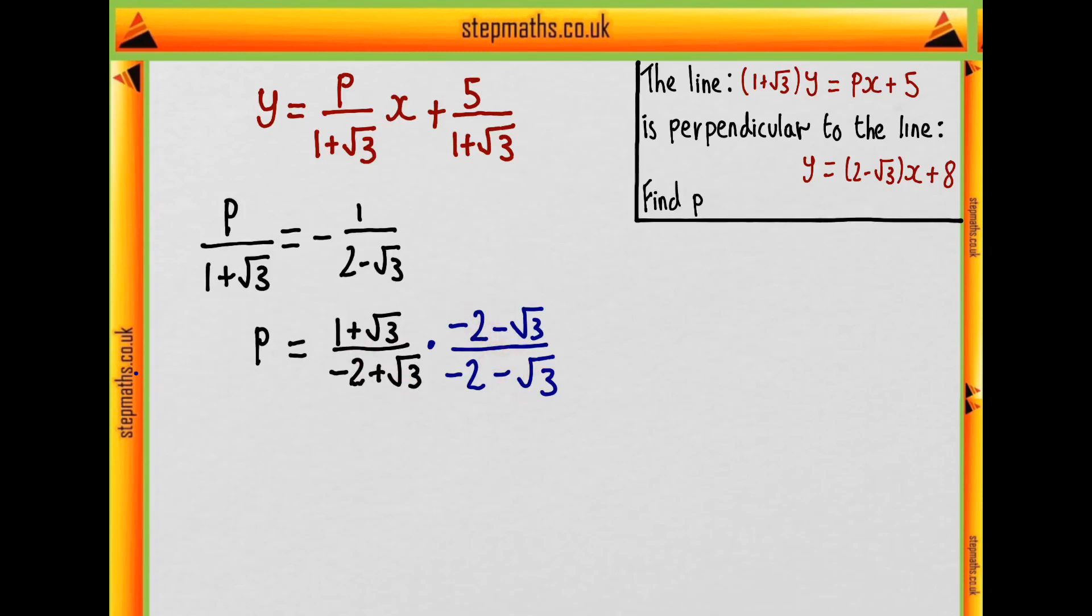So now let's multiply these together. So expanding the top, 1 times minus 2 is minus 2 and then minus root 3, minus 2 root 3 and then plus root 3 times minus root 3 which comes to minus 3.